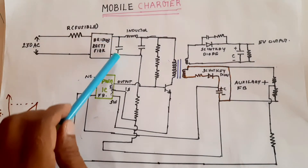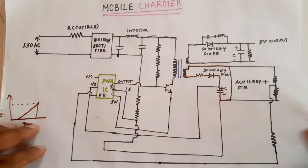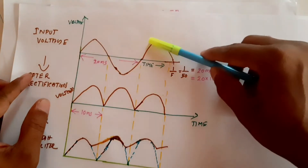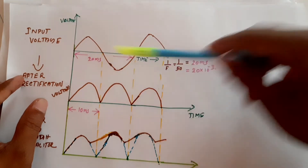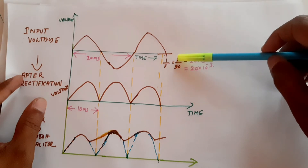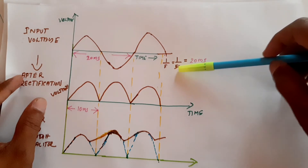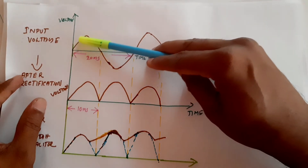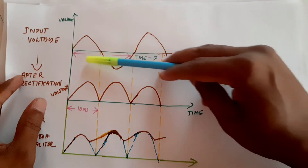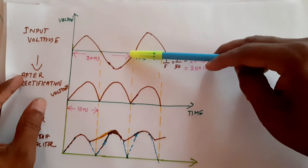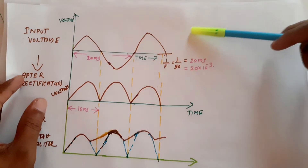The input voltage we are applying has a frequency of around 50 Hz. 50 Hz means the time period will be 1 divided by frequency — 1 by 50 — which is 20 milliseconds. That means this waveform repeats after every 20 milliseconds.